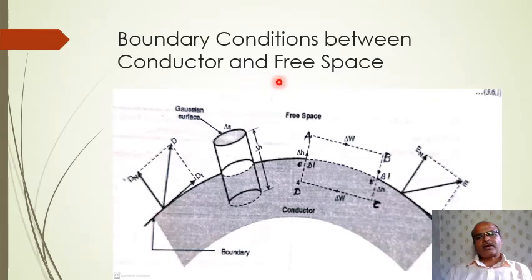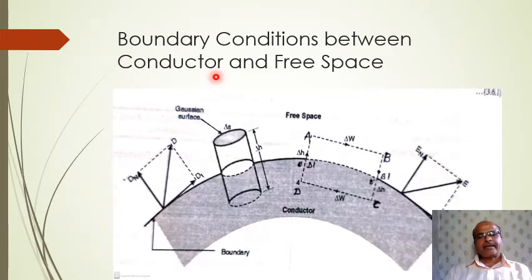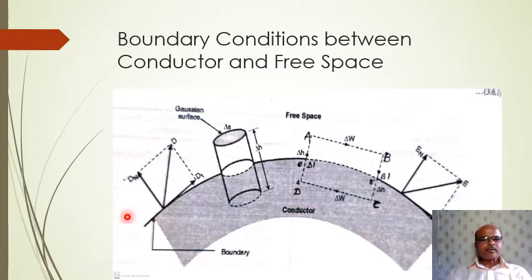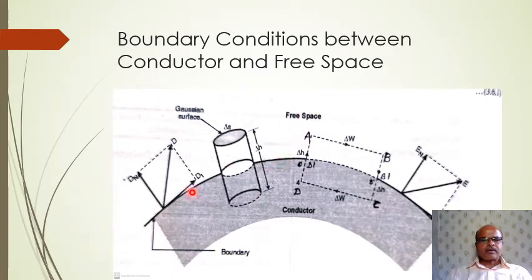These boundary conditions are also called boundary conditions for electrostatics. In the next third chapter, there are other boundary conditions — the boundary conditions for magnetostatics. In this lecture we will study boundary conditions between conductor and free space for electrostatics. We have to consider this figure. Above the boundary line is free space and the lower portion is a conductor.